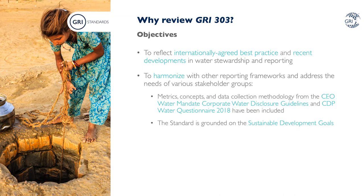GRI 303 Water 2016 has been revised to meet several objectives. Existing concepts and methodologies for measuring and managing water have evolved significantly in recent years. There has been a shift towards water stewardship rather than water management, and towards the adoption of context-based water targets and metrics. So the standard was revised to represent internationally agreed best practice and align with these recent developments. Experts from the World Wildlife Fund, the World Resources Institute and the International Union for Conservation of Nature provided invaluable guidance on context-based metrics, water stress assessment methodology and reporting on water quality.